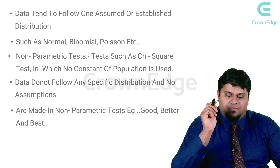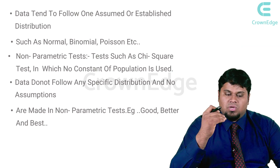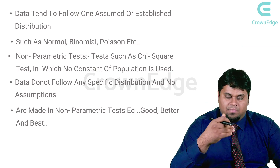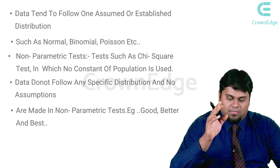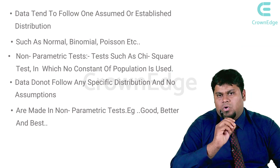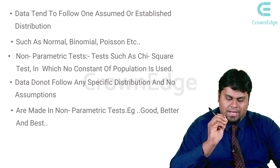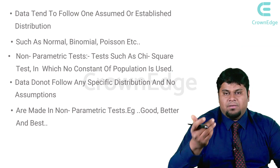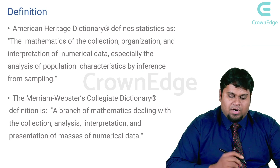Data tends to follow one assumed or established distribution — it can be normal, binomial, Poisson, and so on. Non-parametric tests, however, such as the chi-square test, are ones in which no constant population is used. Data does not follow any specific distribution and no assumptions are made, unlike in parametric tests.